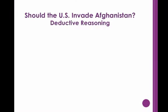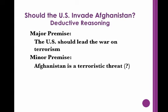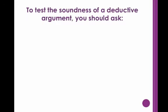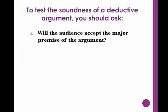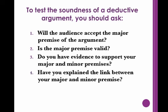Your audience may agree with the major premise that the United States should lead the war on terrorism, but they may not agree with the minor premise that Afghanistan is a terroristic threat, and thus the conclusion that the U.S. should invade Afghanistan. In order to test the soundness of a deductive argument, you should ask: 1. Will the audience accept the major premise of the argument? 2. Is the major premise valid? 3. Do you have evidence to support your major and minor premises? 4. Have you explained the link between your major and minor premise?